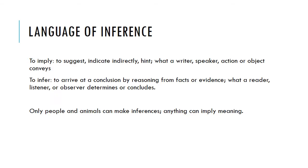Let's examine some of the ways we use language to talk about an inference. To imply is to suggest, indicate indirectly, or hint — what a writer, speaker, action, or object conveys. To infer is to arrive at a conclusion by reasoning from facts or evidence — what a reader, listener, or observer determines or concludes. Only people and animals can make inferences, but anything can imply meaning.